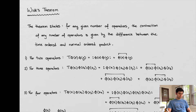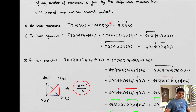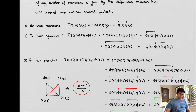What does this mean? For two operators, the time ordered product minus the normal ordered product is equal to the contraction of their product. We write it this way because that's kind of what the book does, but we don't have to write it this way — that's just how it goes.